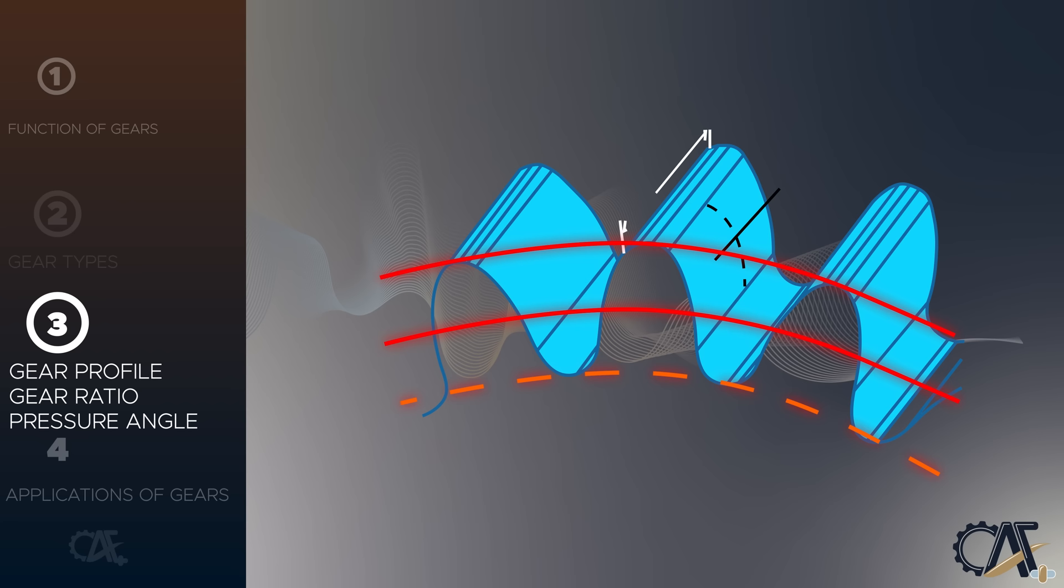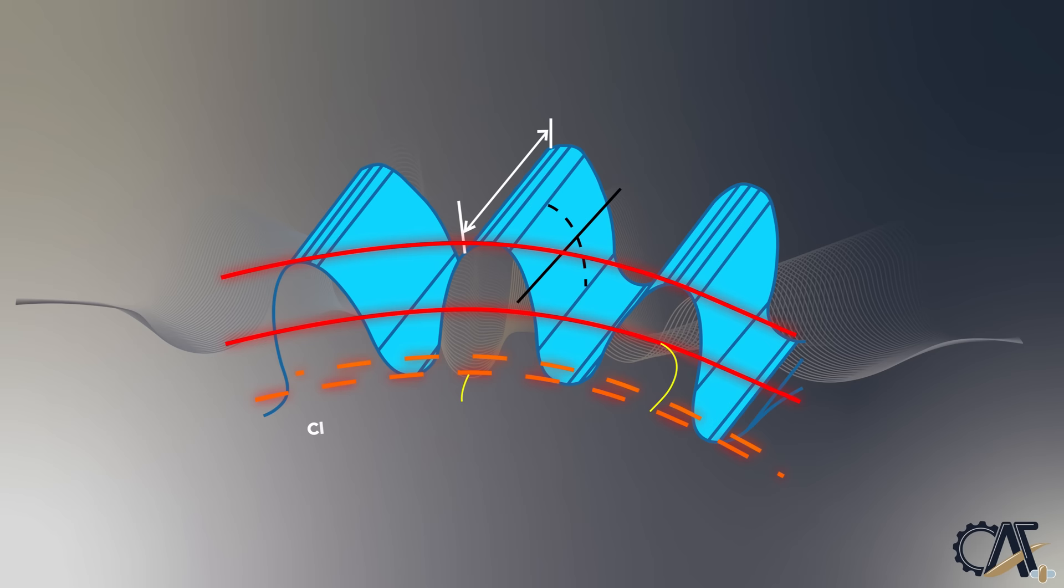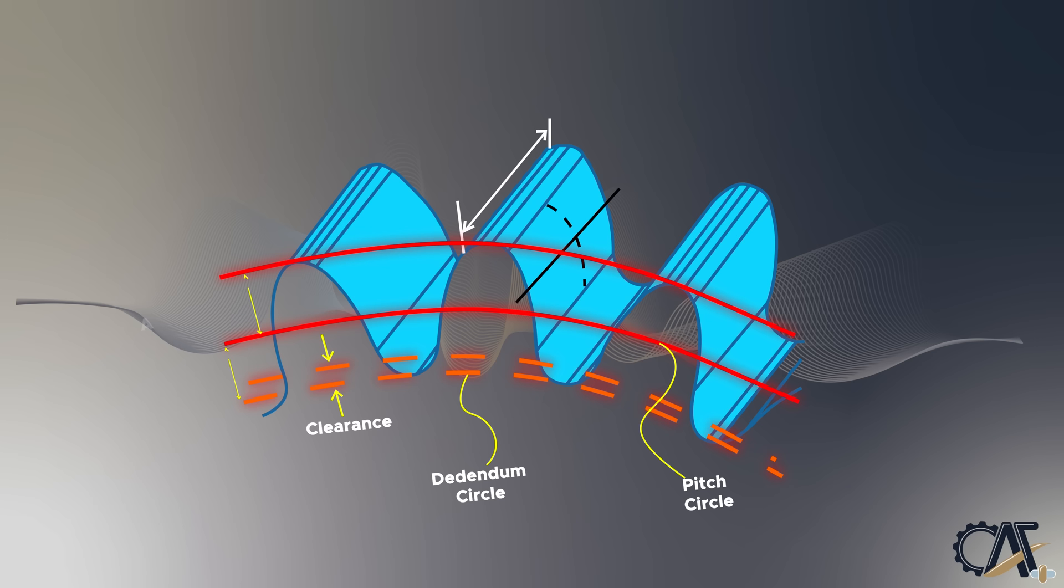As gear design is a wide area on its own, we will only cover three important topics in this section briefly. We will start with the gear profile and continue with the gear ratio and gear pressure angle in the next sections. One of the fundamentals of gear design is the profile of the gear tooth. Before going any further, let's define a few of the important nomenclature of gear profile as shown in this graph.